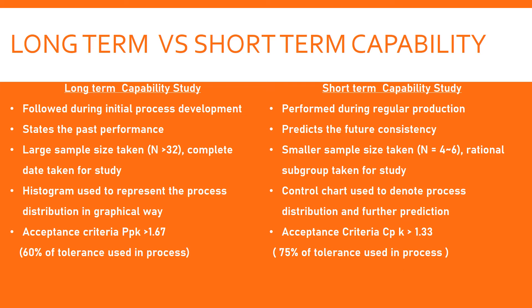The supplier has to immediately act on any indication. A control chart is used to denote the distribution, and it is deployed on the manufacturing site in a continuous manner. The acceptance criteria is 1.33 because it is regular production, so the supplier can utilize 75% of the tolerance of the specification parameter.